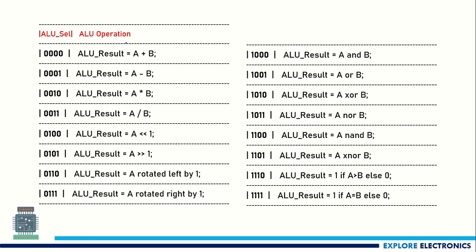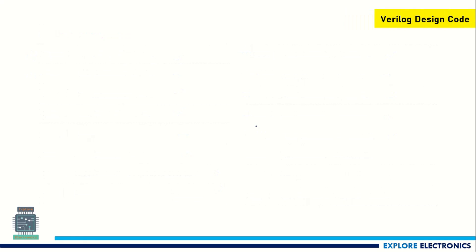Looking at the truth table, opcode 0000 corresponds to addition, 0001 to subtraction, and so on up to 1111. You can see these are arithmetic operations, shifting operations, rotation operations, and logical operations performed by the ALU, with the corresponding opcode given for each.